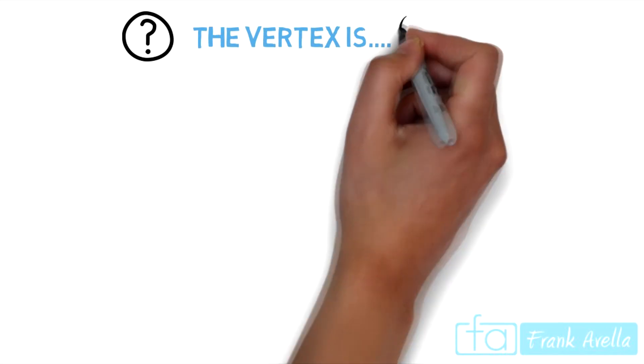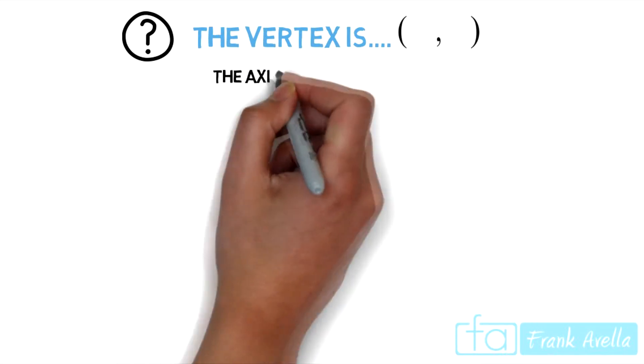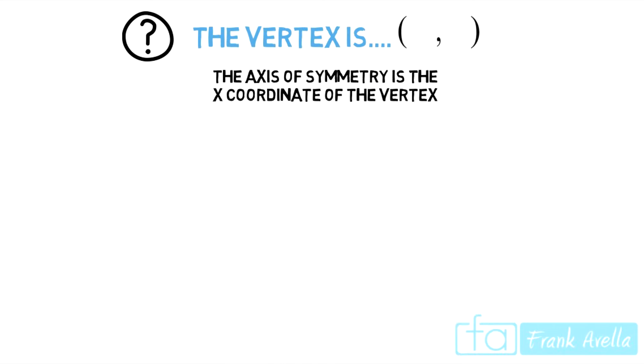Let's go to the second question, which is to find the vertex. What is the vertex? Don't forget, the vertex is a point with an x and y coordinate. The axis of symmetry is actually the x coordinate of the vertex. I'm going to say that again: the axis of symmetry is actually the x coordinate of the vertex.